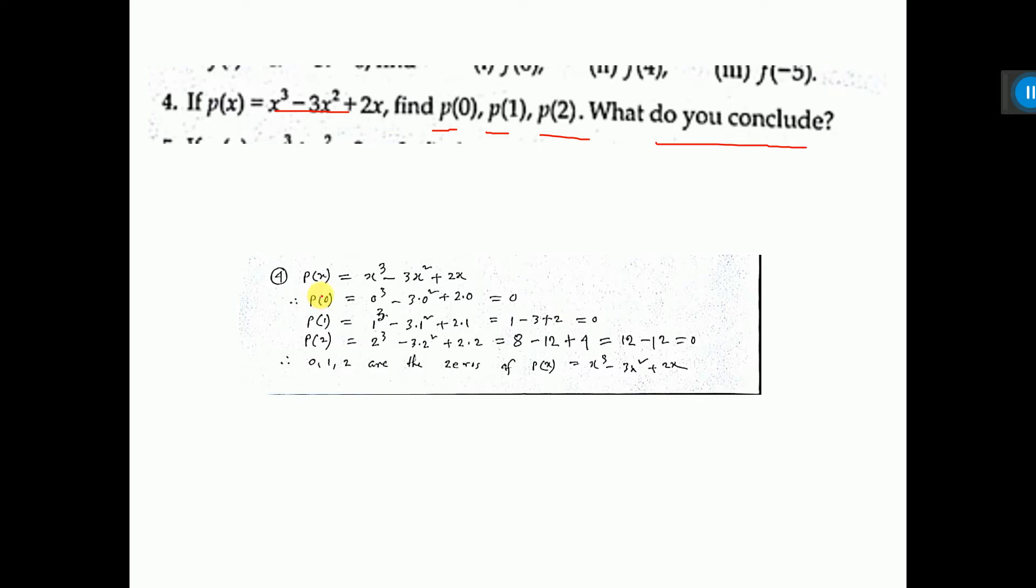So, let us write P(x). Then P(0) means instead of x, you have to put 0. So, 0 cubed plus 3 into 0 square plus 2 into 0. Everything is 0, means you are getting 0 answer.